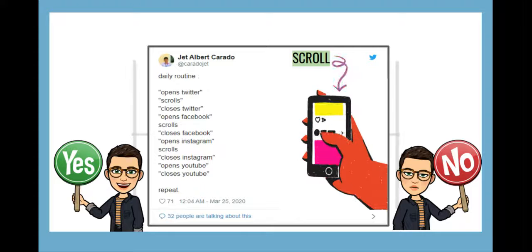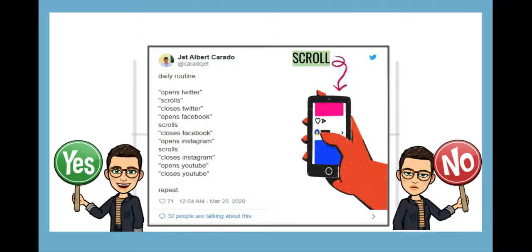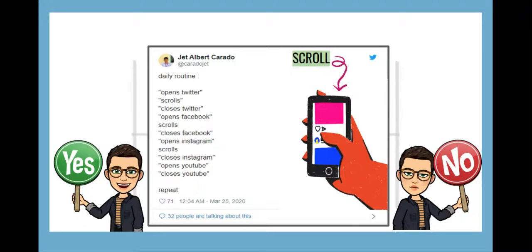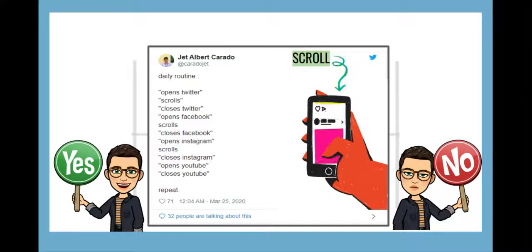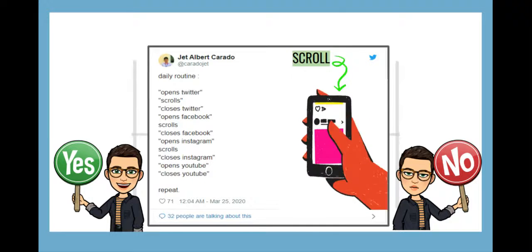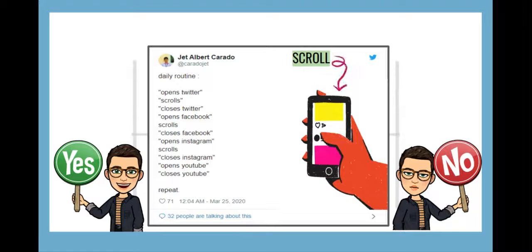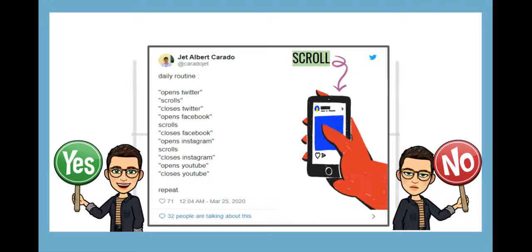Another one. Opens Twitter, scrolls, closes Twitter. Opens Facebook, scrolls, closes Facebook. Opens Instagram. Opens YouTube, closes YouTube. And repeat. Have you been using a lot of social media lately? Let me know. And another vocab tip: "scrolls" — it's when you open up the applications for your social media and you keep moving your fingers up and down to check the posts. This is scrolling. Take a look at the GIF on the screen — this is the action of scrolling.